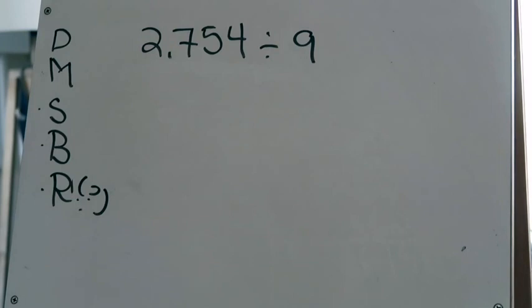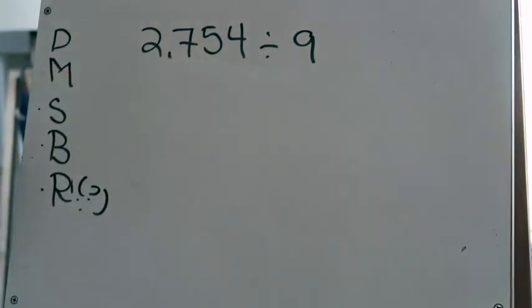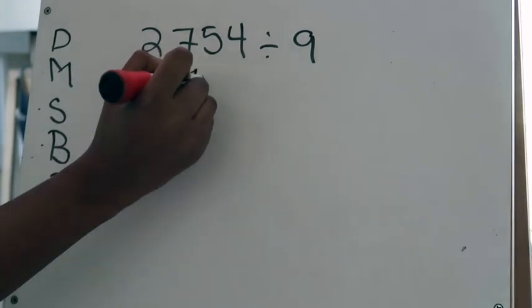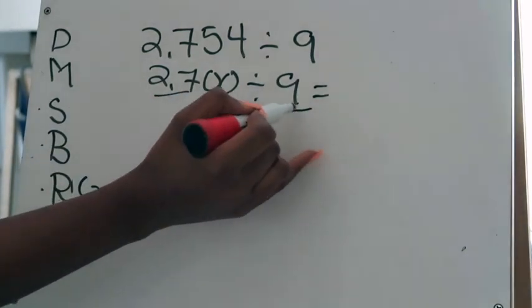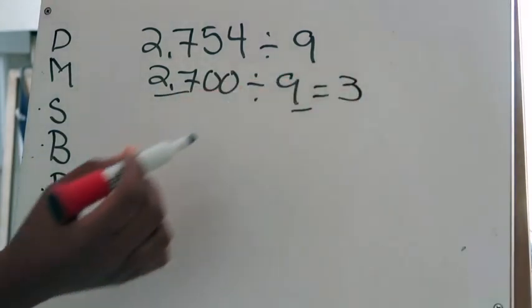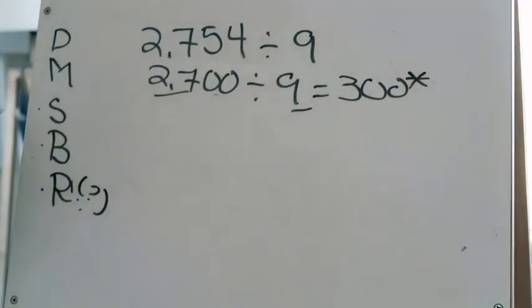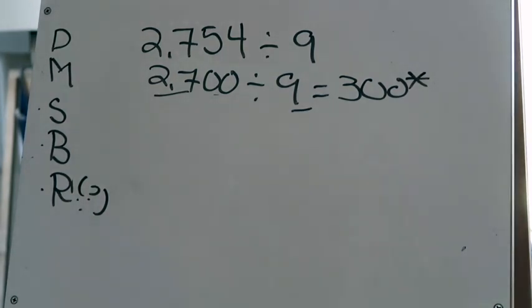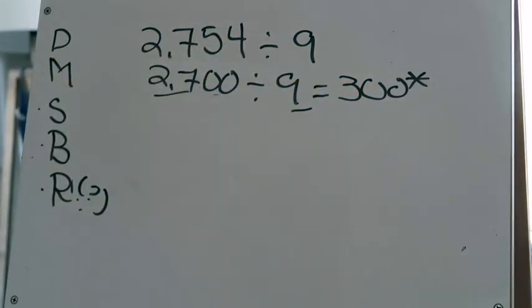We're going to use 2754 divided by 9 to practice. First, the estimated answer: what can I change 2754 to that's easily divisible by 9 but close to the original? I can change it to 2700 divided by 9. That pulls out the basic fact 27 divided by 9 equals 3. Using powers of 10, I add two zeros, giving an estimated answer of 300.